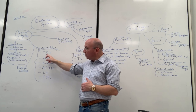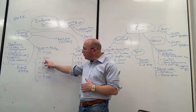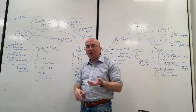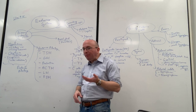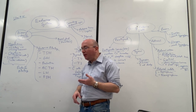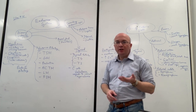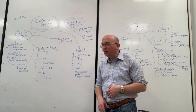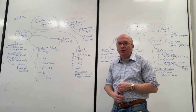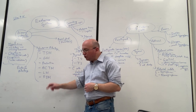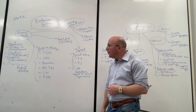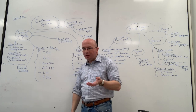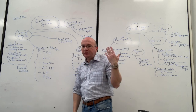TSH stands for thyroid-stimulating hormone. GH stands for growth hormone. Prolactin deals with the mammary glands — the breast tissue in the female. ACTH is the adrenocorticotropic hormone. LH is the luteinizing hormone, and FSH is the follicle-stimulating hormone. LH and FSH deal primarily with reproductive system functions. ACTH deals with the adrenal gland. TSH deals with the thyroid, and growth hormone has effects throughout the whole body.